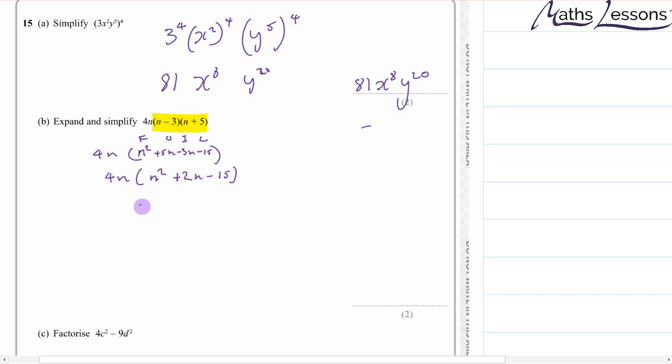That gives me plus 2n minus 15. And then multiply that out. So we get 4n cubed. Multiply these two together, you get 8n squared. Multiply these two together, we get minus 60n. And that's our answer that we're going to write in just here. So just remember, multiply out the two brackets, get something, then multiply it all by that 4n. If you had a third bracket, you just do the same again. You just multiply out the two brackets, get that, get another bracket here, then do everything times everything. So you'll get two things times three things, which will give you six bits to combine afterwards.